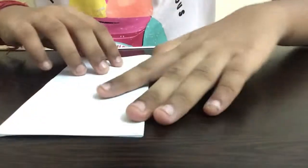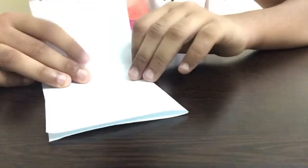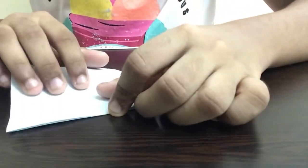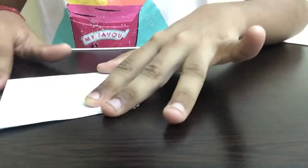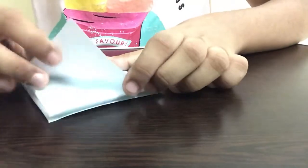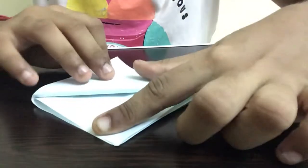Step number two is that we're supposed to fold the paper in half one more time. Now we have to take one piece of paper from the top and fold it to the bottom.